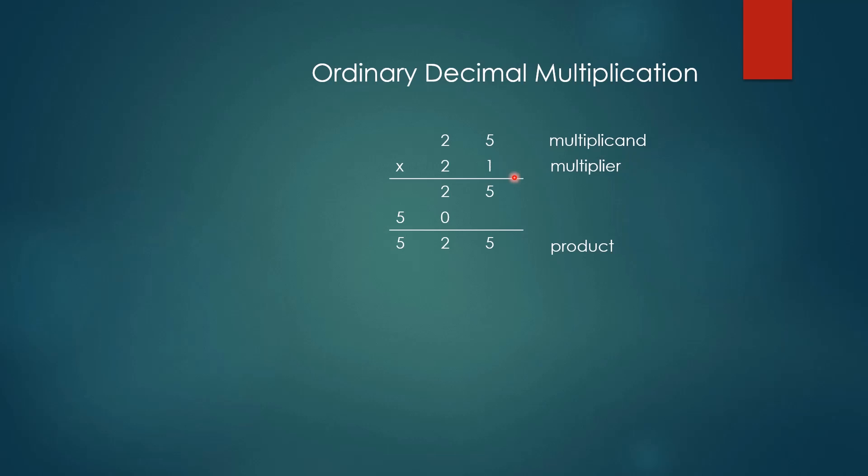When we get to the second digit of the multiplier, we shift our answer one place to the left because now we are multiplying by 20 rather than 2. Once we work through all the digits of the multiplier, we add all the partial products to get our final answer.